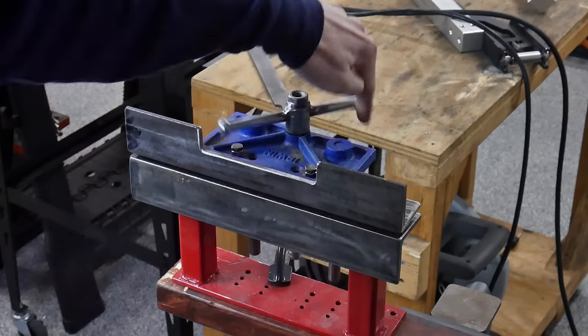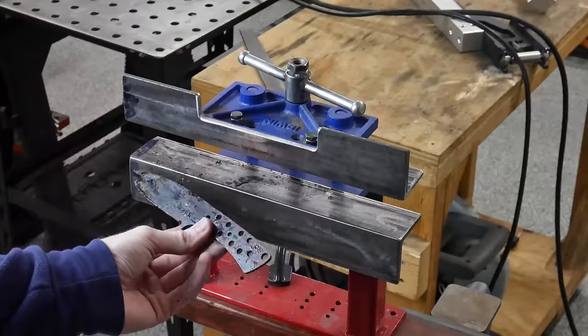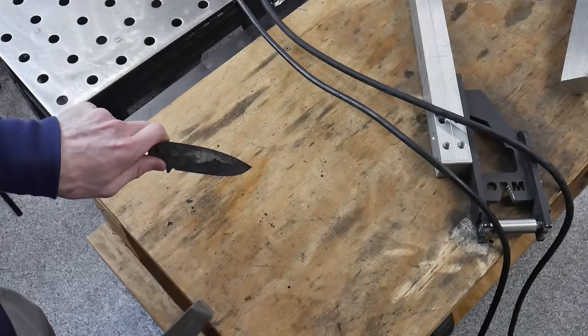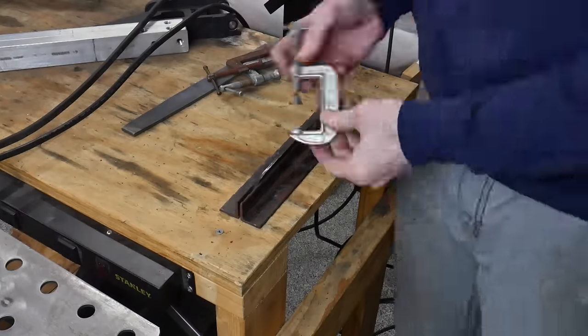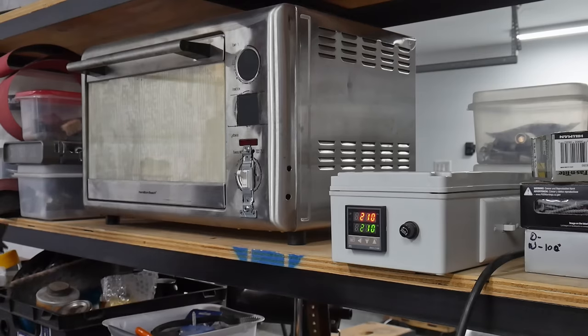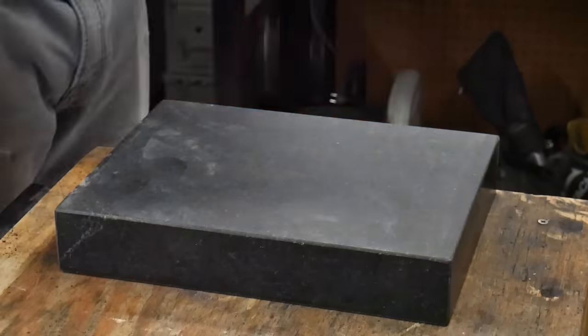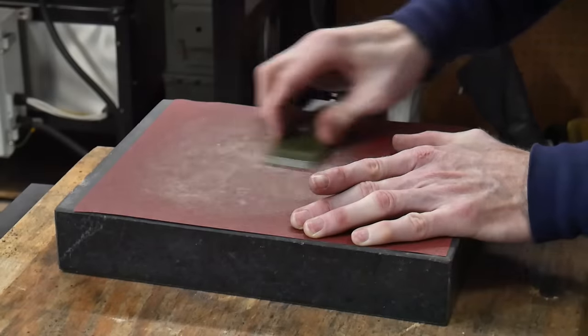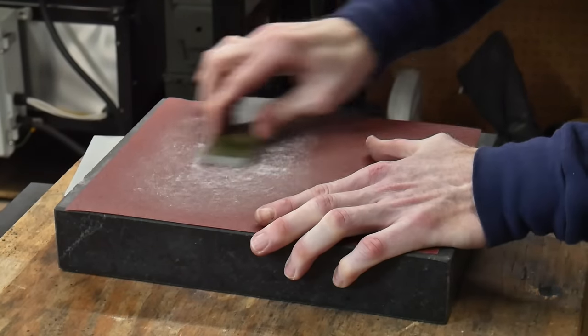After the blade has cooled in the clamp, I take it out and file test it. This file test is basically a quality control step confirming the blade has achieved a hardness equal to or greater than the file. If the file cuts into the steel, something went wrong. In this case, we have a hard blade, so we clamp it between two pieces of angle iron and put it into our tempering oven. For this knife I'll be running two two-hour tempering cycles at 410 degrees Fahrenheit.